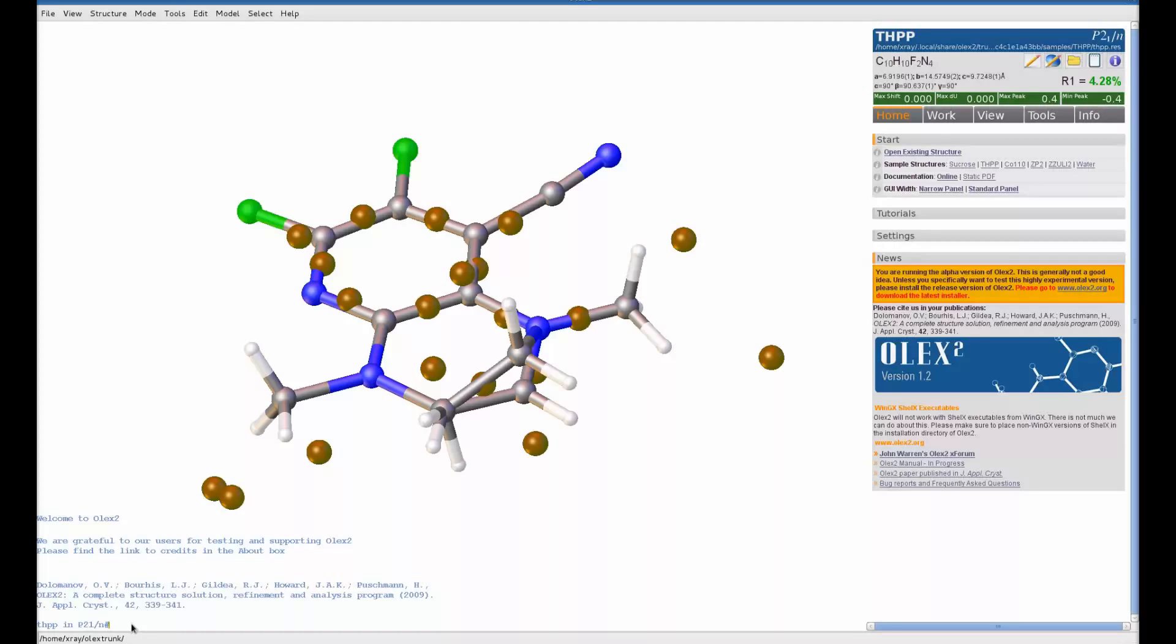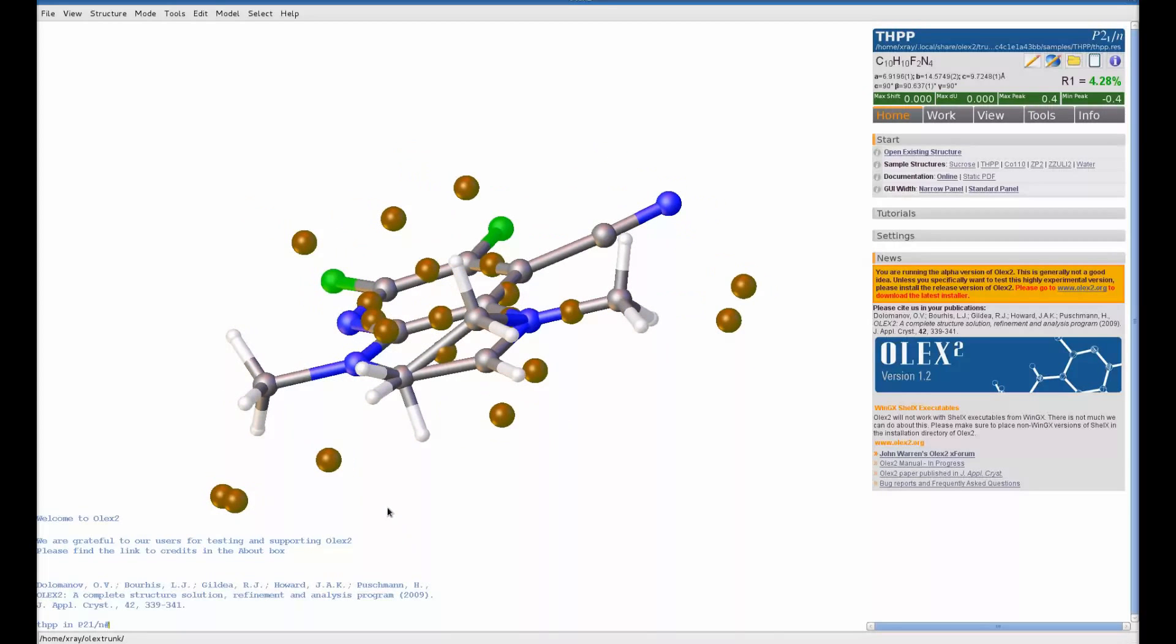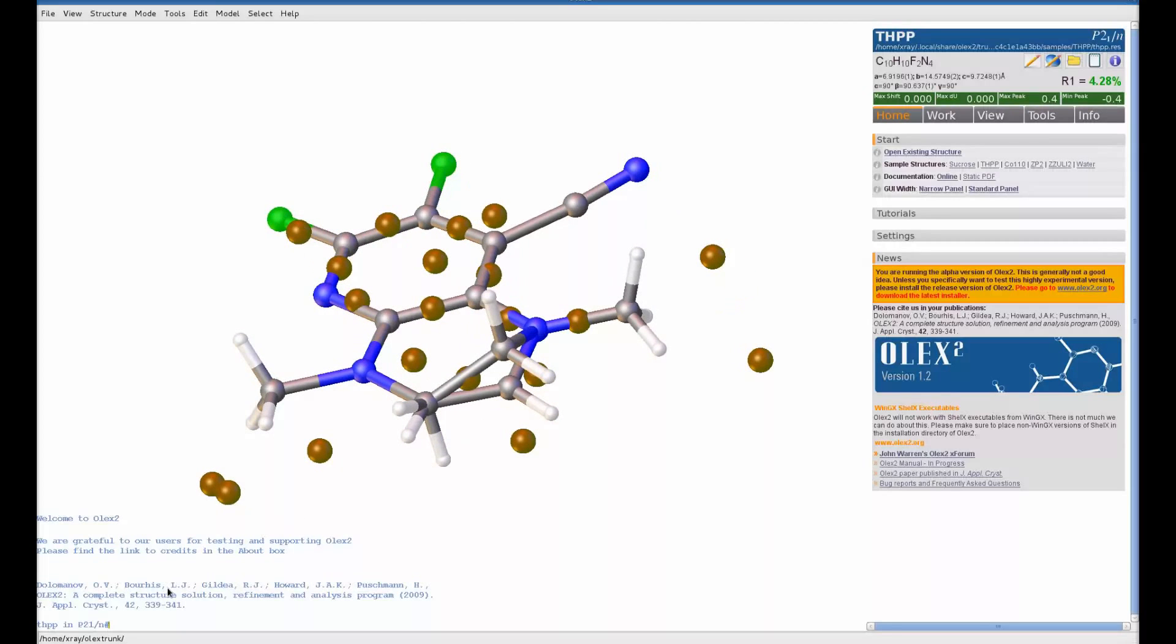We're currently using the structure THPP because this comes with a sample set which has a nice disordered component. If we take our model, which you can see here with the disordered parts, and type SHOWP...